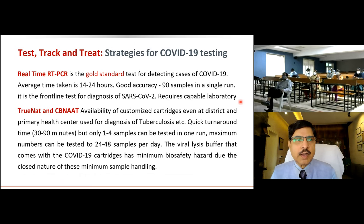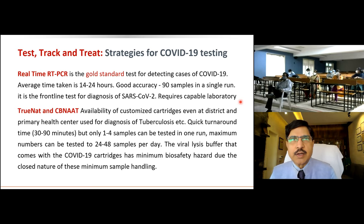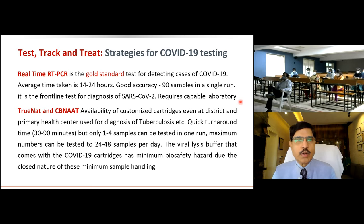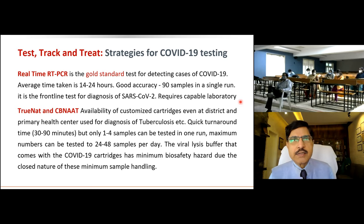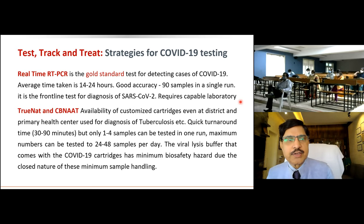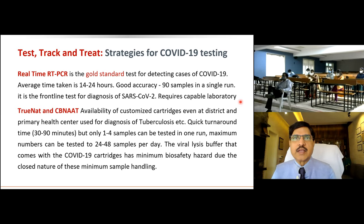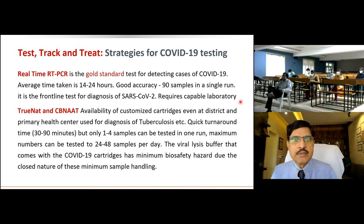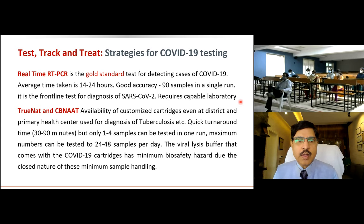RT-PCR stands for real-time PCR; if you add a 'q' it becomes quantitative PCR, which gives the cycle time rather than a simple yes/no result. Average turnaround is 14 to 24 hours. TrueNAT and CBNAAT are also nucleic acid amplification tests, similar to the GeneXpert for TB, processing one to four samples at a time with results in 30 to 90 minutes. RT-PCR can process up to 90 samples in one go.